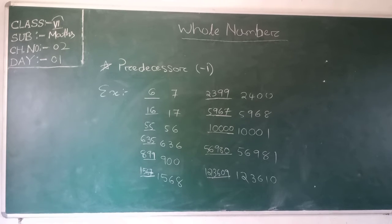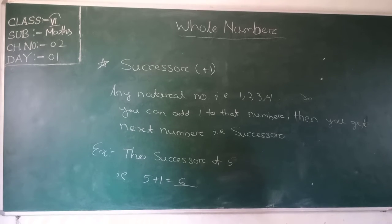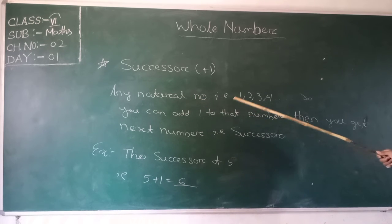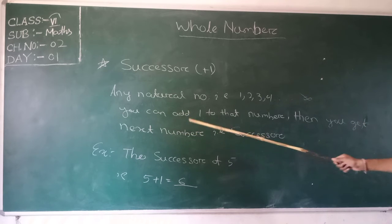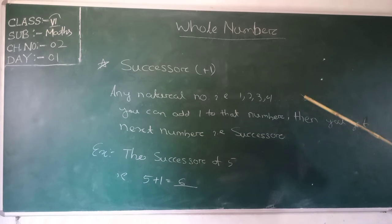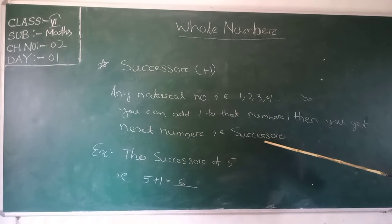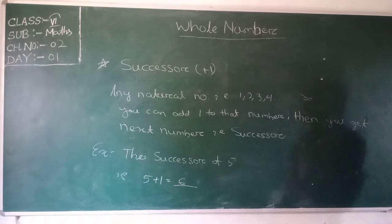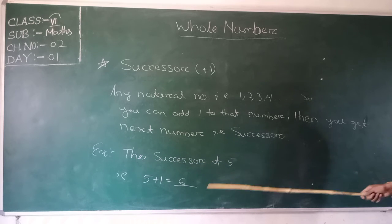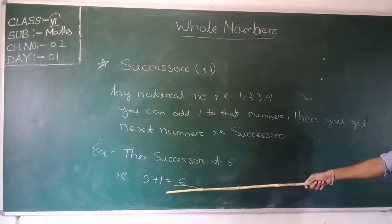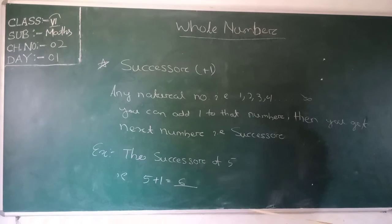Now let us discuss the next topic: Successor. For any natural number — 1, 2, 3, 4 up to infinity — you add 1 to that number and you get the next number, which is the successor. So the successor of 5 is 5 plus 1 equals 6.